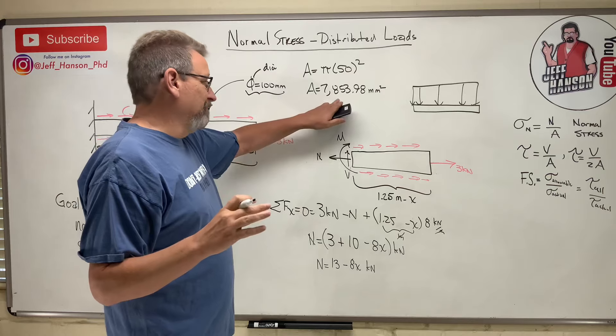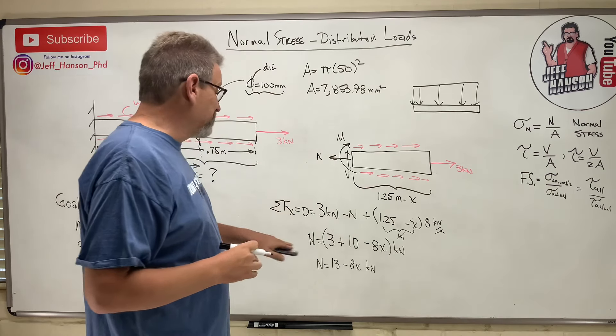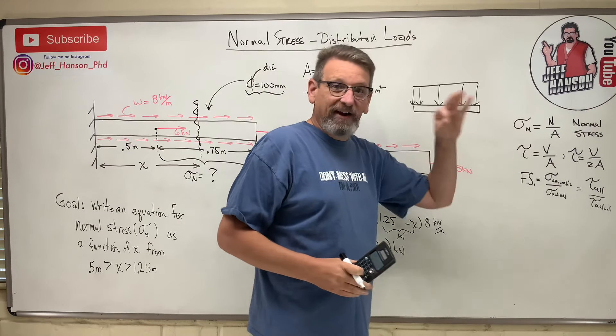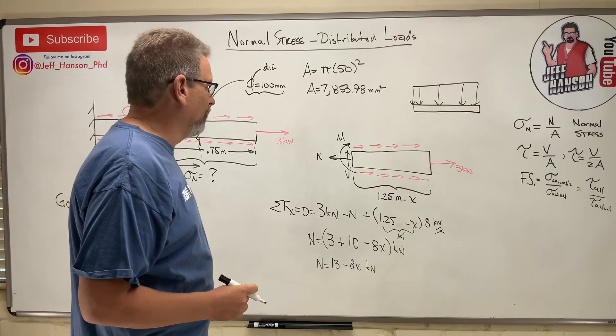I like that. I'm just going to leave it in millimeters. Some of you might be like, I would change it to meters. I'm going to change this one instead to newtons. That way, I've got newtons over millimeters squared, which is megapascals. Way to go. You remembered. Okay, here we go.